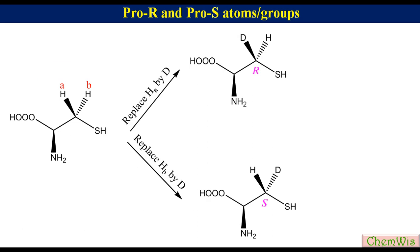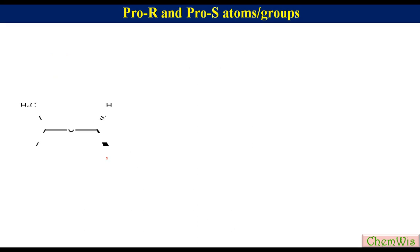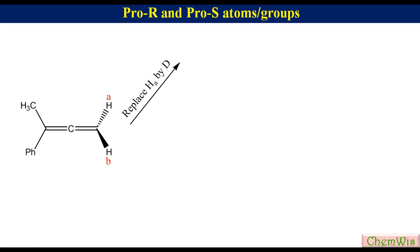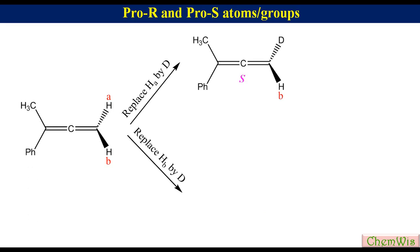So HA is Pro-R while HB is Pro-S. Taking the example of prochiral allene: replacement of HA with deuterium gives the S enantiomer, while replacement of HB gives the R enantiomer. So HA is Pro-S while HB is Pro-R.